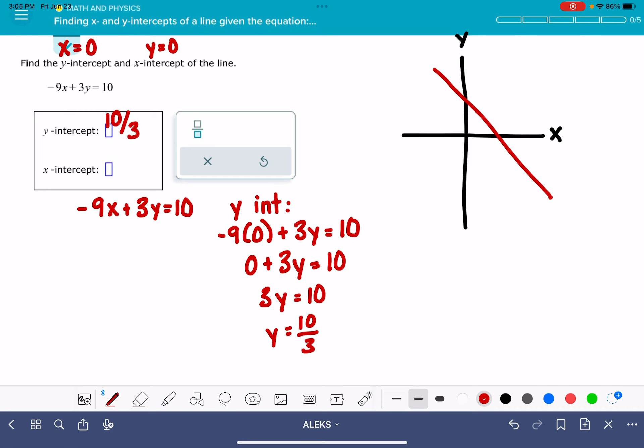To find the x-intercept, I'm going to do the same thing. At the x-intercept, I know that y equals zero. So I plug zero in for y in my equation and get -9x = 10. That gives me x = -10/9, which is my x-intercept.